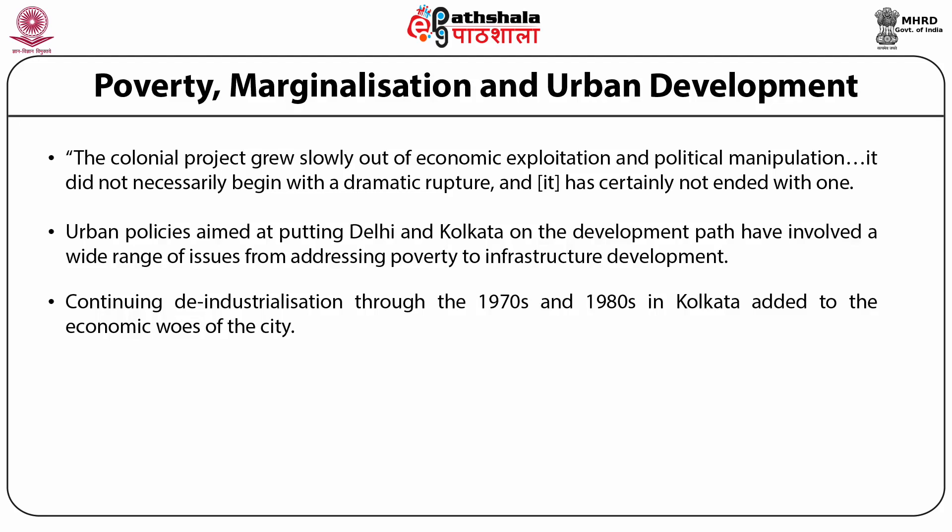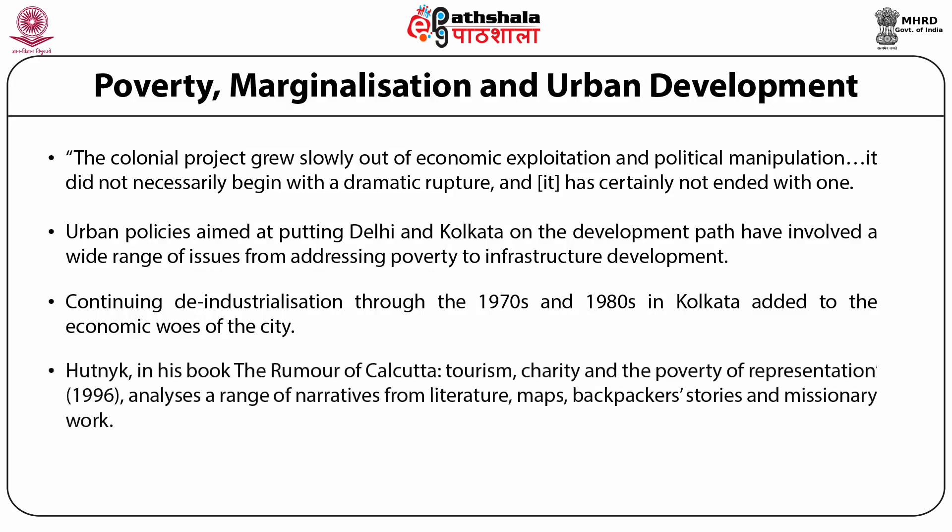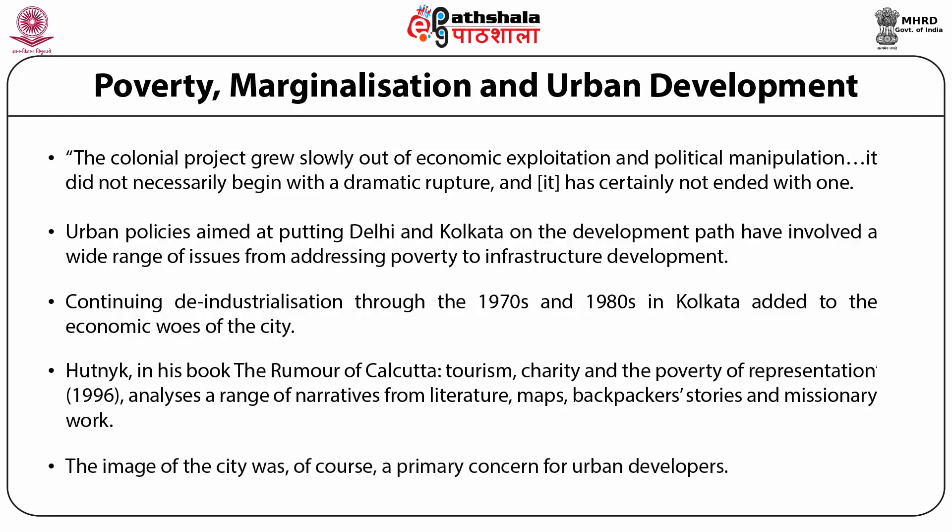Along with the myth of the dying city, Kolkata was also swamped with images of poverty. In his book 'The Rumour of Calcutta: Tourism, Charity and the Poverty of Representation,' the author analyzes a range of narratives from literature, maps, backpacker stories, and missionary work. While Delhi did not have an image issue like Kolkata, there were concerns around improving civic conditions. The image of the city was a primary concern for urban developers. We examine whether urban development plans in Delhi and Kolkata have successfully tackled poverty or created more marginalization.